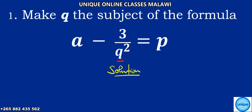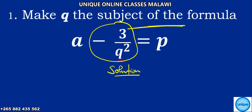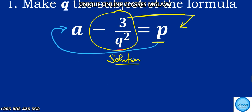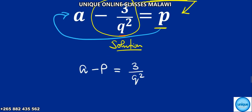We need to make the whole of this side positive. The negative term on this side, while making it positive, goes to the other side. So what will happen is we're going to have: a minus P is equal to 3 over Q squared.